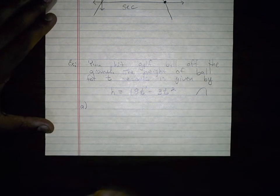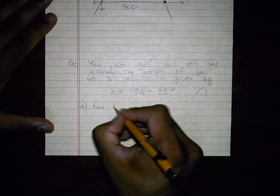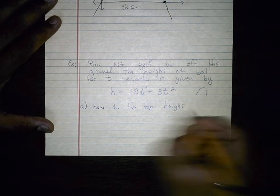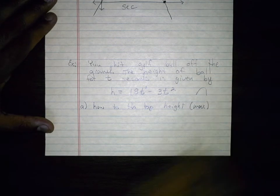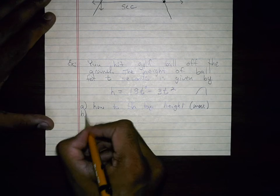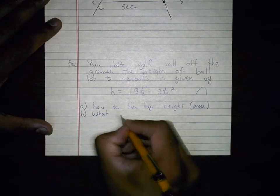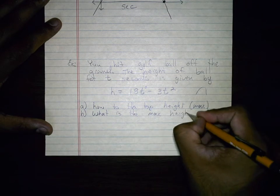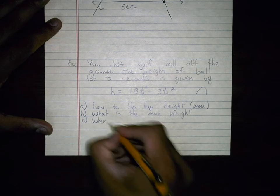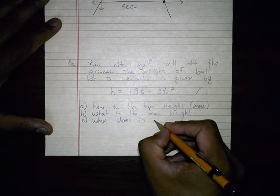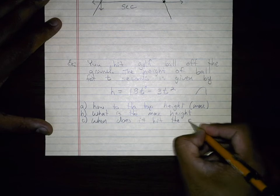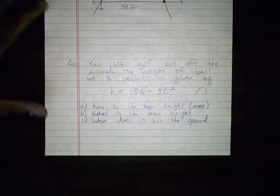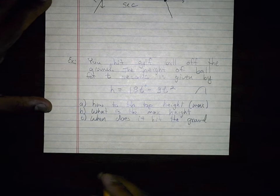Because they want two things here. So this is what they want. They want how long does it take to get to the top? They want B, they want to know what is the max height. And C, when does it hit the ground? So we got to find all three of those things. So first things first, let's go ahead and find the vertex.